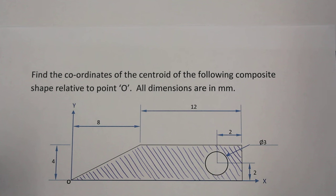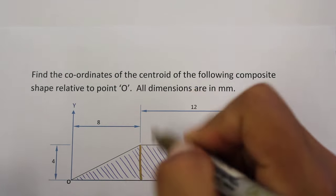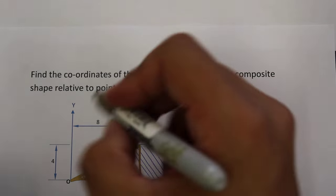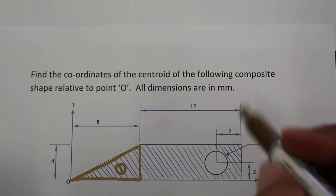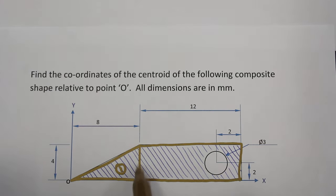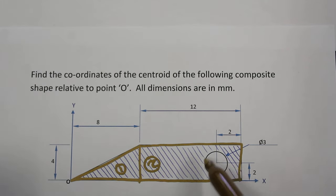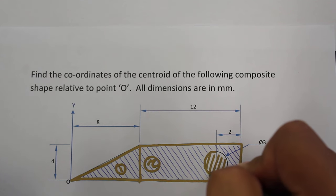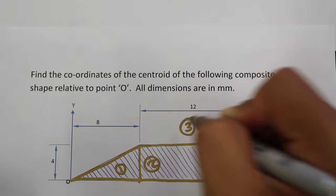In our previous class we introduced how to find the centroid for a triangle, a rectangle, and a circle. The shape here can be broken up into three pieces. The first piece is a triangular shape on the left-hand side — this is shape number one. The second shape is a rectangular shape around the outside edge — shape number two. And then inside this rectangular shape there's a circular hole which has been cut out, giving it a negative area — shape number three.